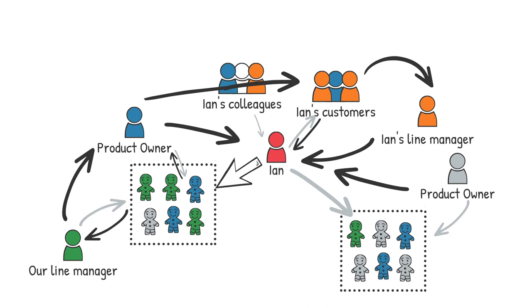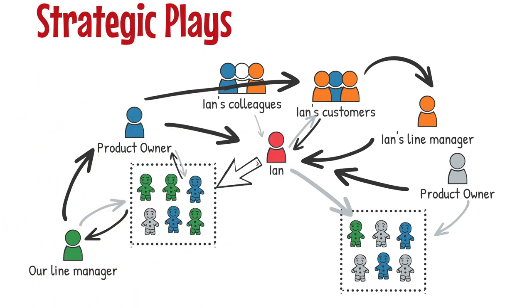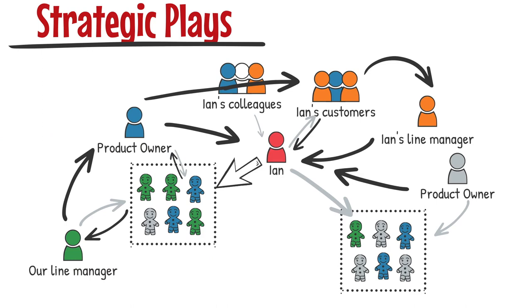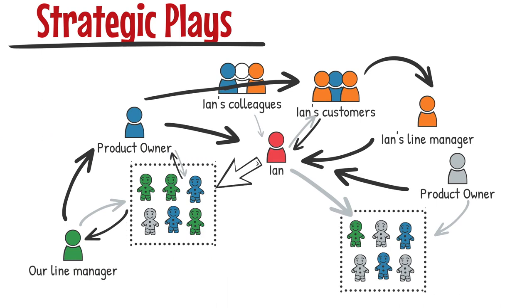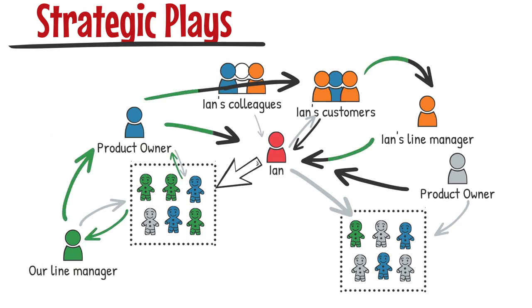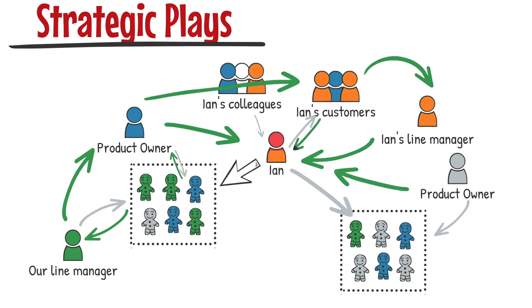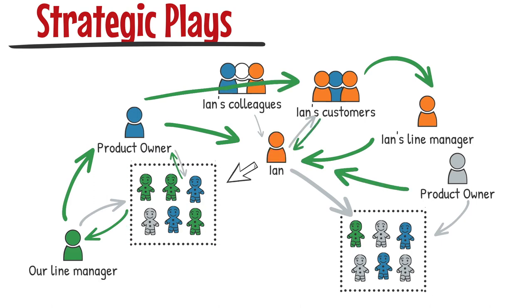Some influence strategies might be more long term — what we might call strategic plays. For example, we might lobby our product owner to use her network within Ian's customers and her relationship with another product owner to influence Ian.